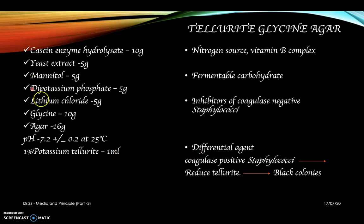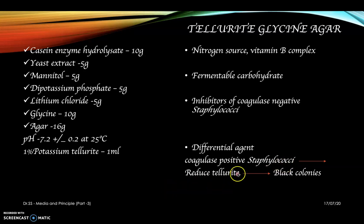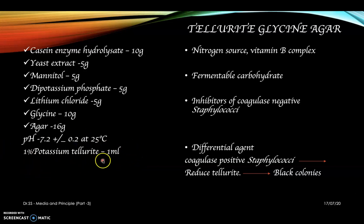After preparing and sterilizing the medium, 1% potassium tellurite is added after sterilization is complete. Its main role is as a differential agent — coagulase-positive staphylococci can utilize tellurite, reduce it, and form black colonies. Potassium tellurite is a toxic component and must be handled very carefully in the lab.